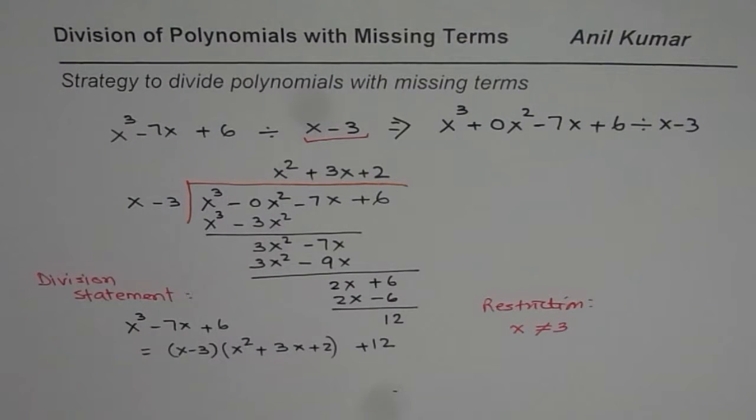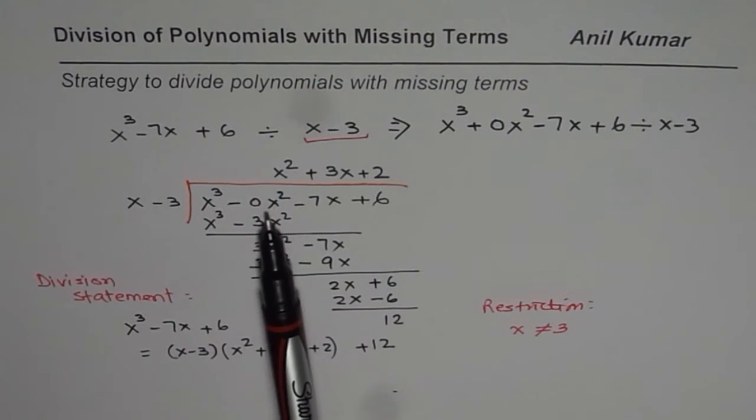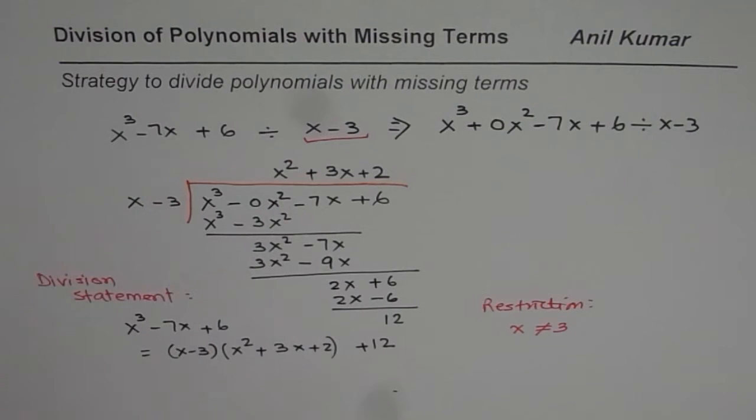That is how you could actually divide polynomials with missing terms. And I hope you understand now what I mean by missing terms. Some terms have 0 coefficients. Those are the missing terms. They should be included when you perform long division or even synthetic division. I hope that helps. Thank you.